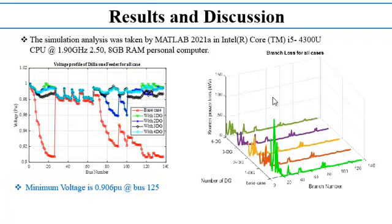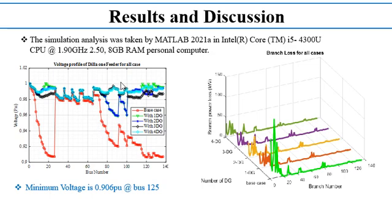Here are the results and discussion. The simulation analysis was conducted in MATLAB software. The voltage profile of the system is shown for different cases. The base case, shown as the red line, represents the existing distribution system, with a minimum voltage of 0.906 per unit at bus 125. When DG is applied, the voltage profile improves. The second diagram shows branch power loss for all cases, from 1 DG up to 4 DG, across 136 branches.